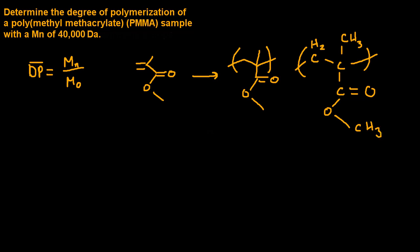So first, we need to determine the molecular weight of the monomeric repeat unit. So, we'll identify the different atoms within the repeat unit, which in this case, we have carbon, hydrogen, and oxygen.